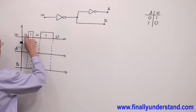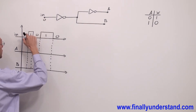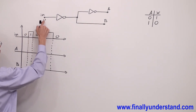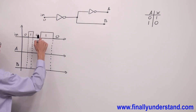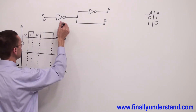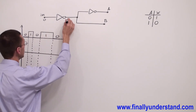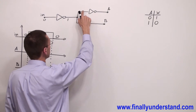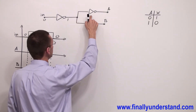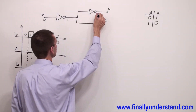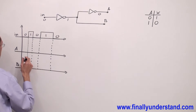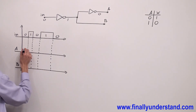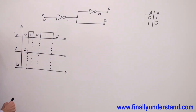First we are going to apply zero to this input. Zero is going to come to this point and this zero is going to be inverted to one. This one is going to be inverted again to zero. So I'm going to have zero at the output, at point A.